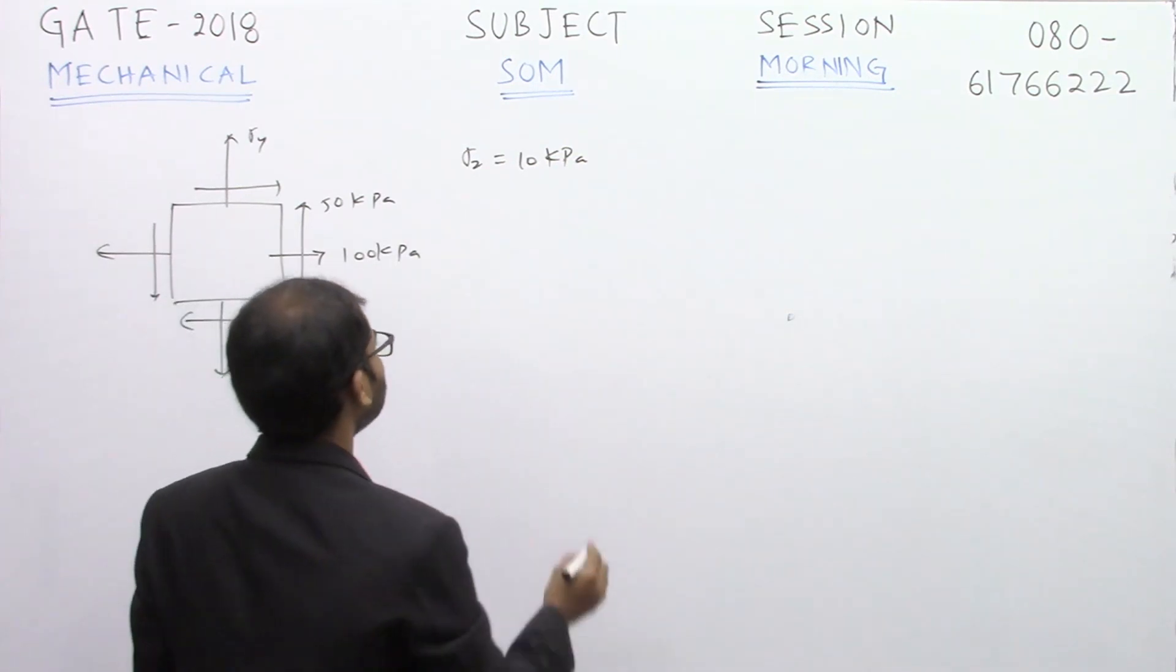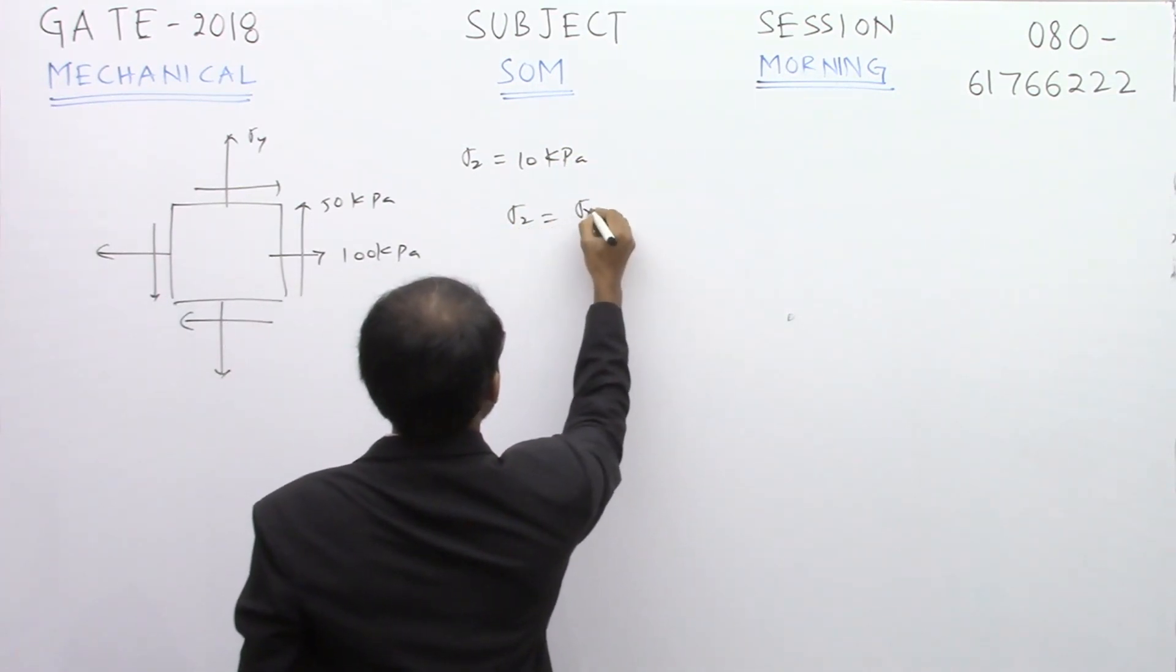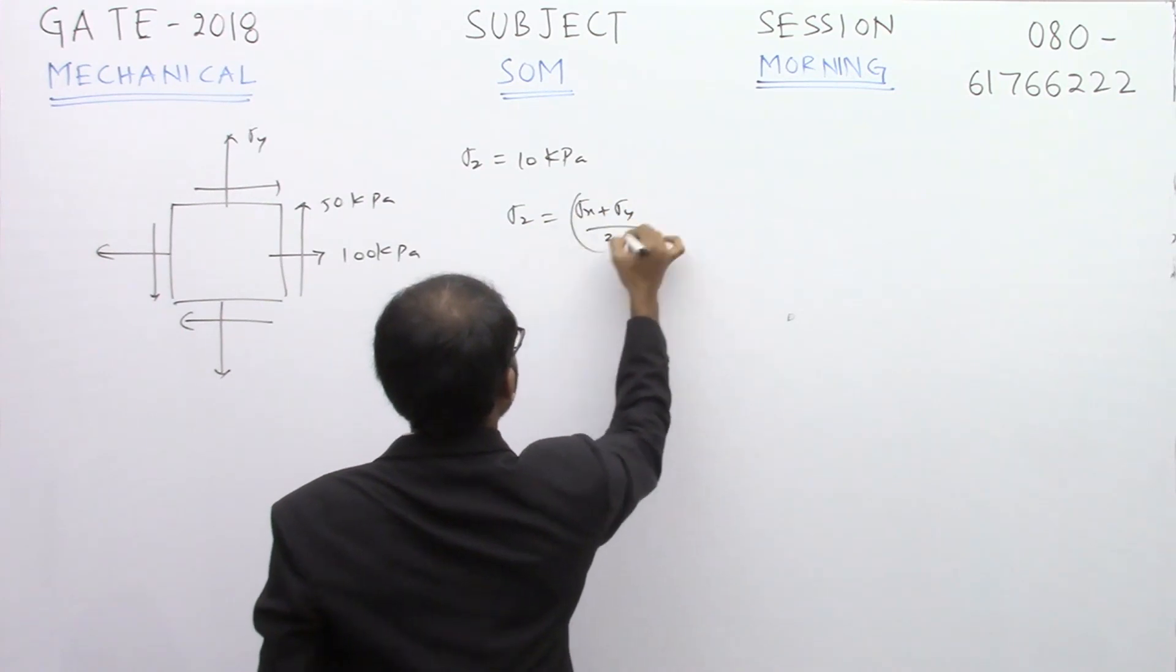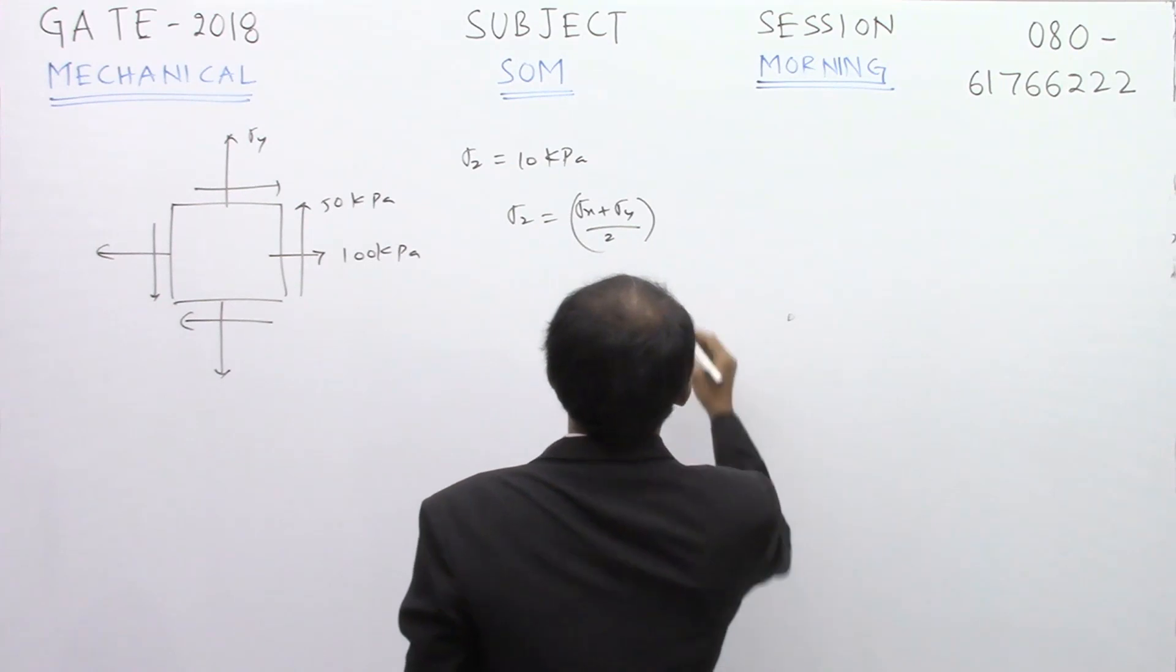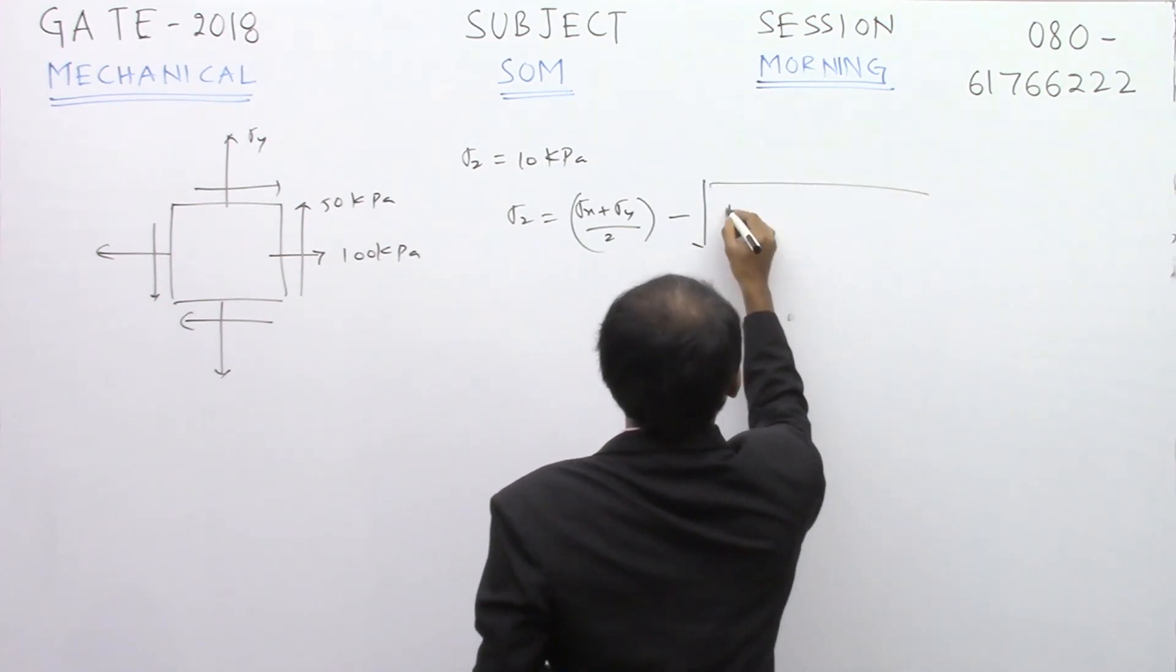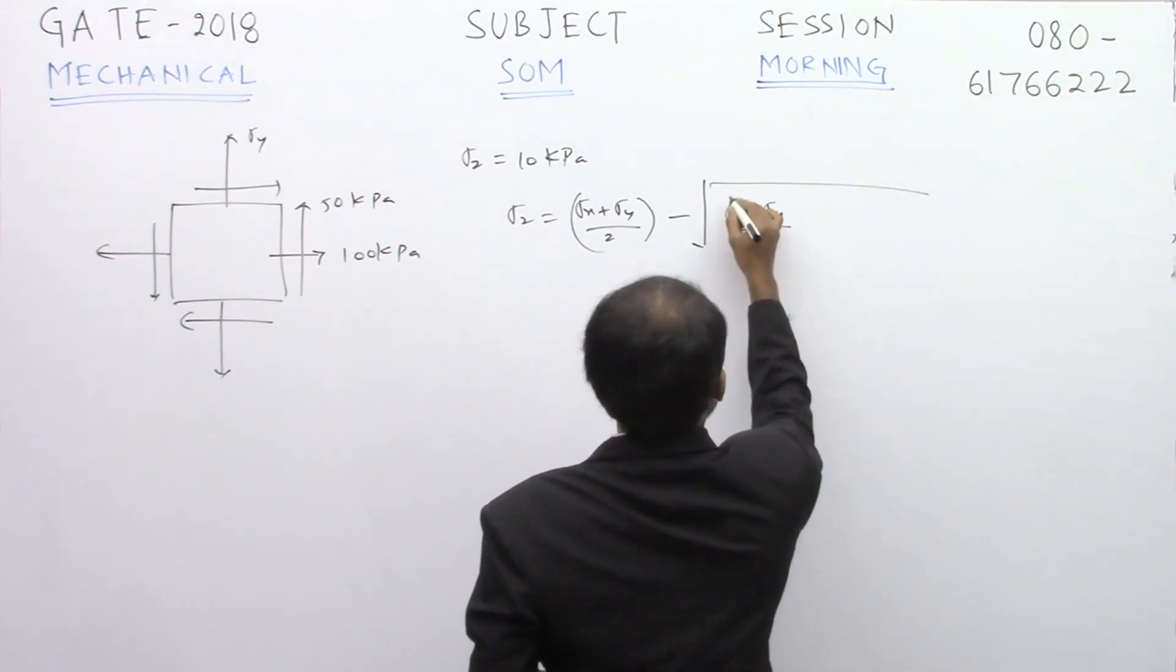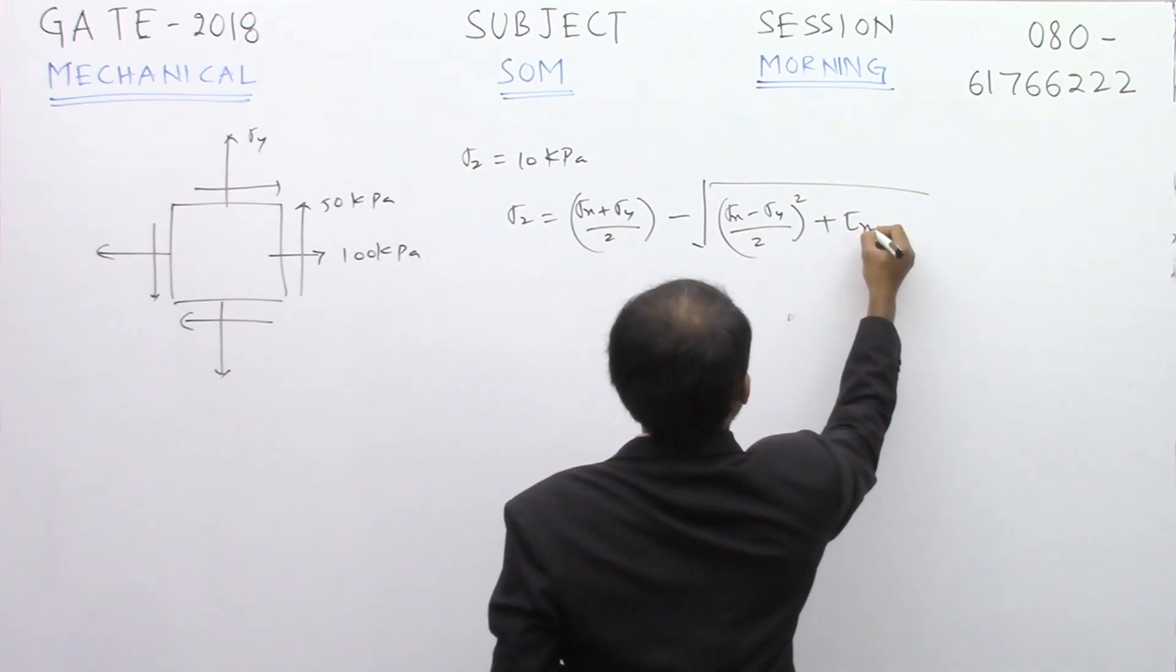We have the formula for sigma 2 here. Sigma 2 is actually nothing but sigma x plus sigma y by 2, we will be using minus here because it is minimum principal stress, minus square root of sigma x minus sigma y by 2 whole square plus tau xy square.